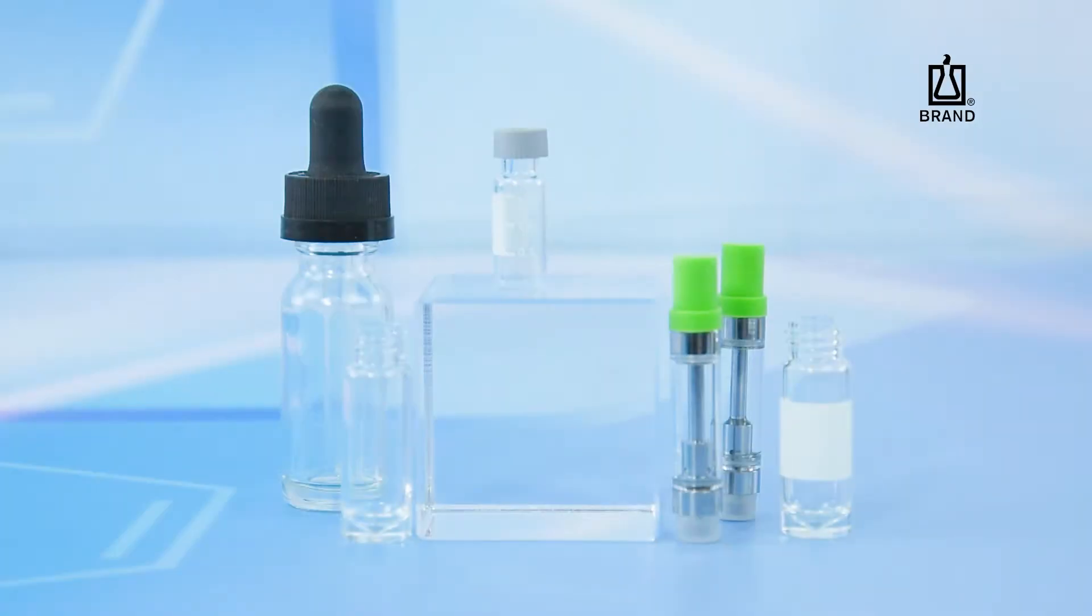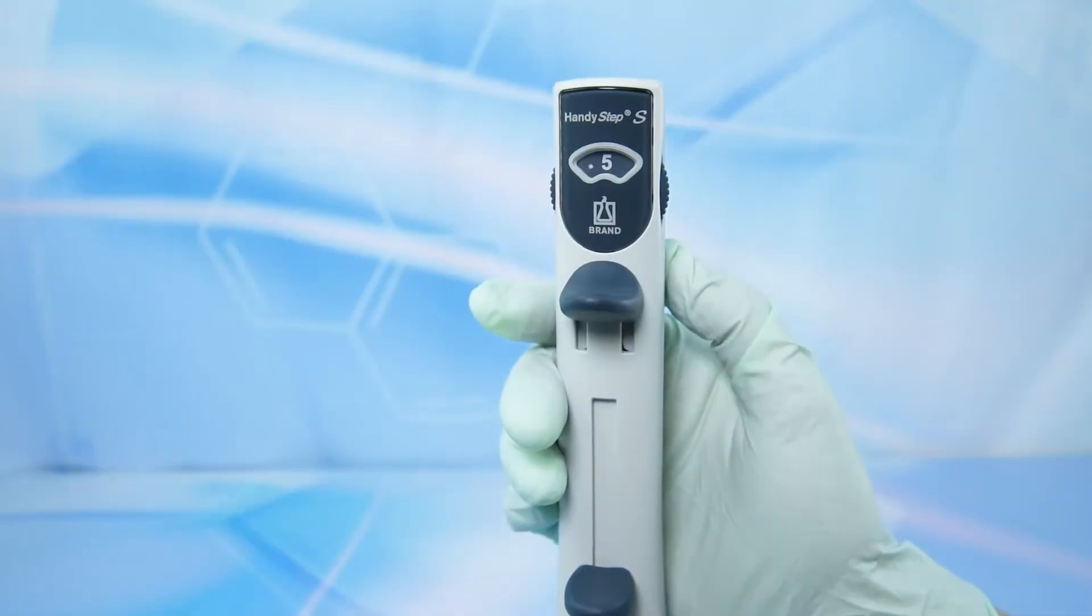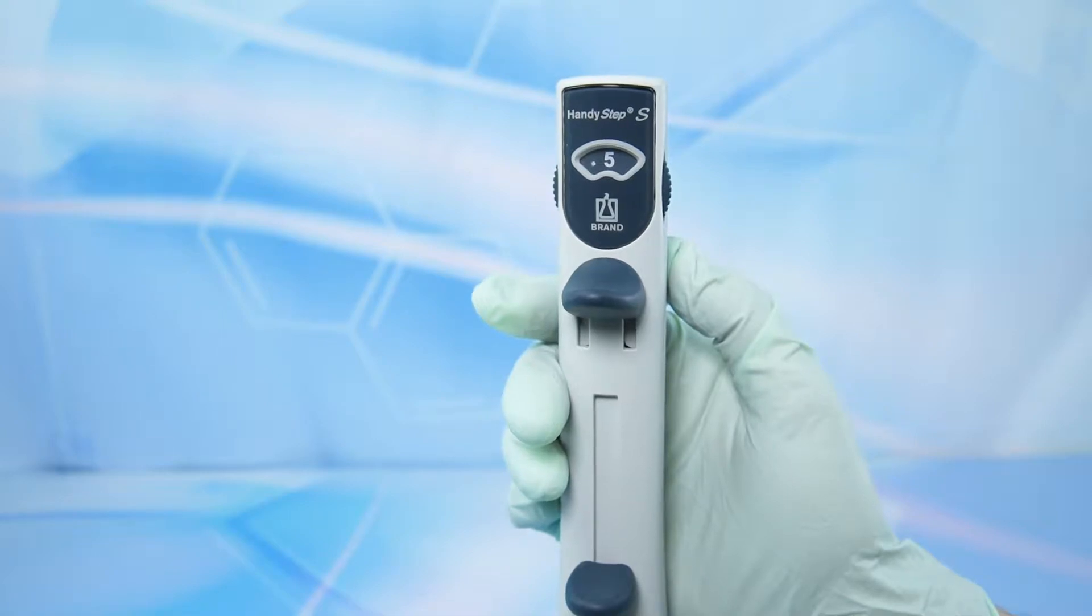Prior to filling your vials or cartridges, you should confirm that the volume held by the container is less than or equal to the volume set on your HandyStep S. Failure to do so can result in spillage.